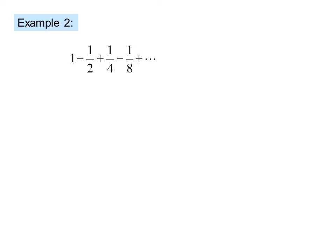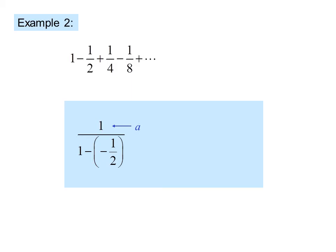Example two: one minus one-half plus one-fourth minus one-eighth. The first term is one and the common ratio is negative one-half. So the infinite sum is one over one minus negative one-half, where one is a and negative one-half is r. We get one over one plus one-half, which is one over three-halves, which equals two-thirds.